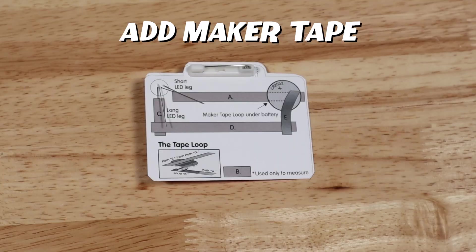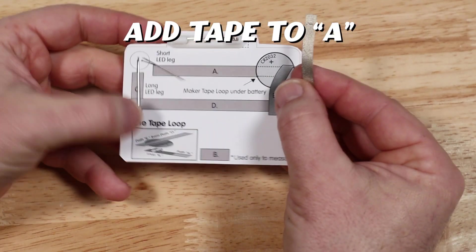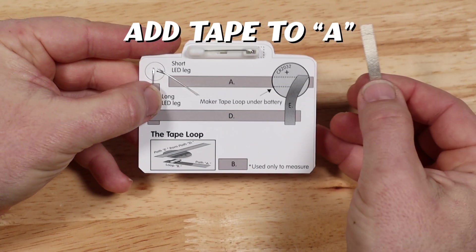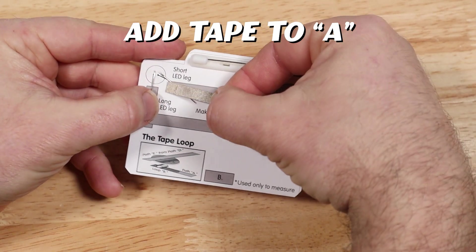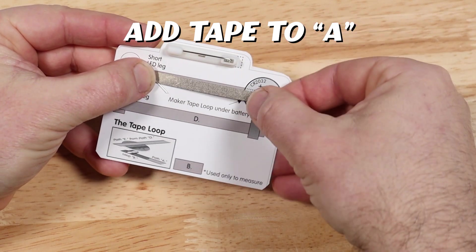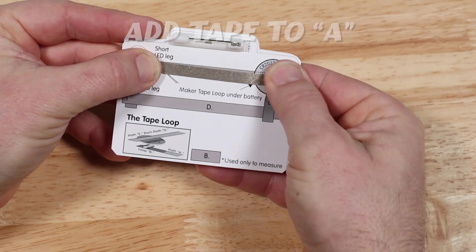Now we're going to start adding the conductive maker tape to the project. Cut a piece of maker tape the length of A, peel the backer, and place it over the short leg of the LED all the way through where the battery is going to sit.